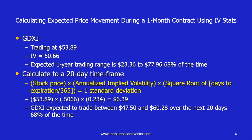Let's look at GDXJ at the time I was referring to, with implied volatility over 50. At the time, GDXJ was trading at $53.89 with an implied volatility of 50.66%. That means the expected one-year trading range is from $23.36 to $77.96, 68% of the time based on one standard deviation. In this particular case, there were 20 days left to the one-month contract expiration. Since IV stats are based on one year, is there a formula that will tell us the expected price movement over the next 20-day timeframe? The answer is yes.